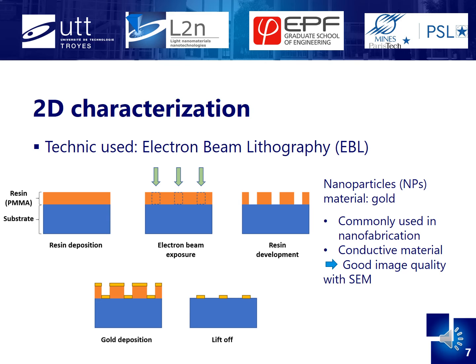It is important to obtain the smallest roughness possible because of the electron beam lithography process. This technique depends on the application of a resin, which is then exposed to an electron beam to remove certain areas defined by the user. After the development of the resin, a layer of gold is deposited evenly on the surface. Gold is commonly used in nanofabrication and is a conductive material, which makes it a good candidate for SEM observation. After its deposition, the rest of the resin is removed with a solvent, leaving only the nanoparticles at the surface of the material.